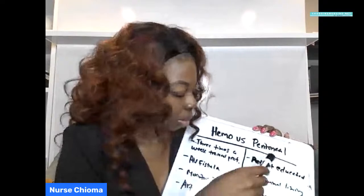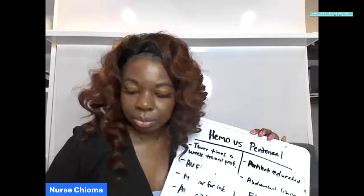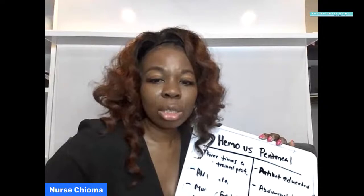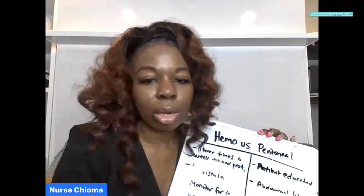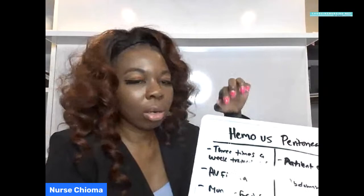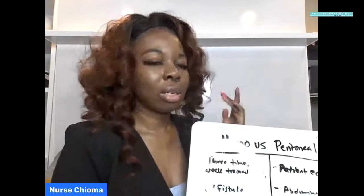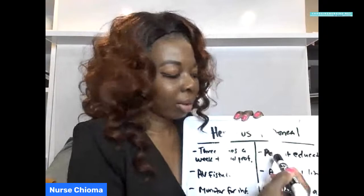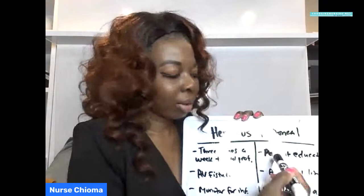Another key difference with peritoneal dialysis versus hemodialysis is that the patient needs to be educated and know how to do it themselves. Because it is a permanent solution, the patient needs to know how to perform the procedure at home on their own, unless they have a reliable family member to help. This is why hemodialysis is more often chosen — if a patient is confused or lethargic, they would not be a good candidate for peritoneal dialysis, since the patient must be able to change the bag and understand the procedure. The filtration occurs through the abdominal lining.